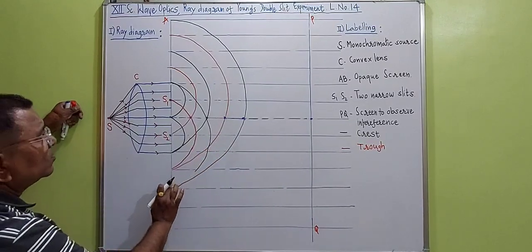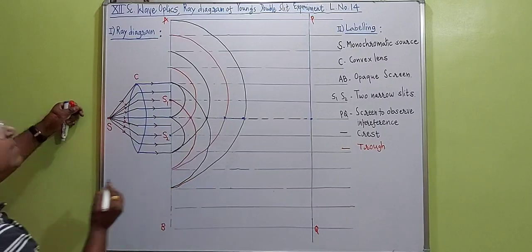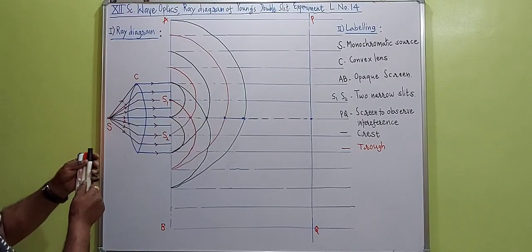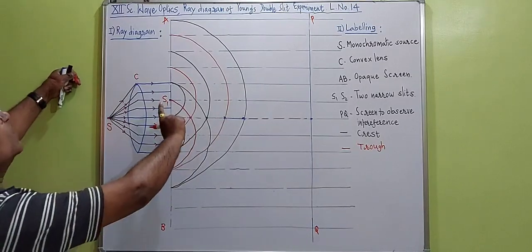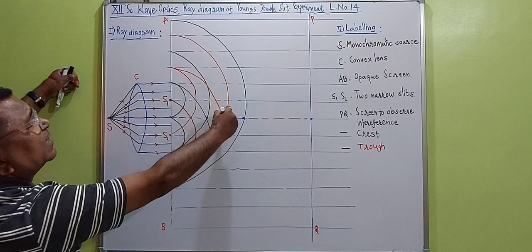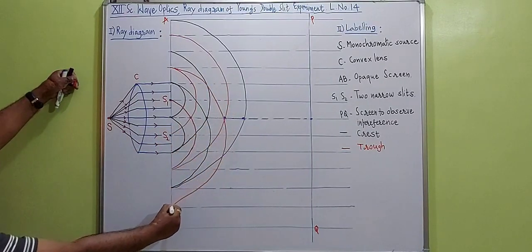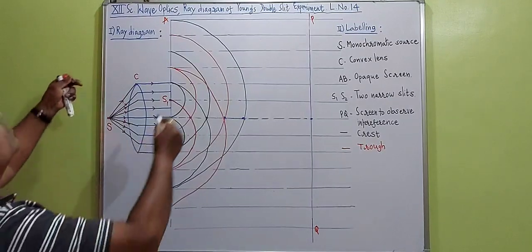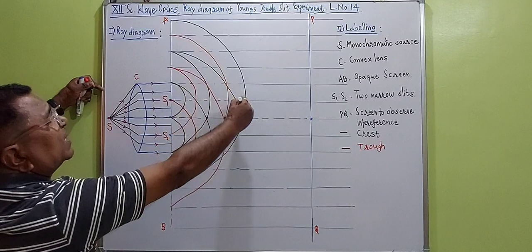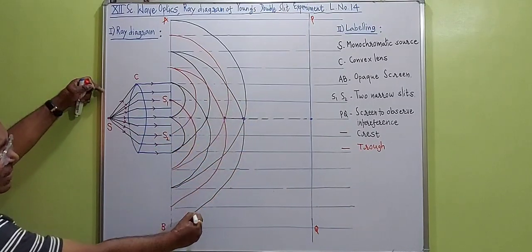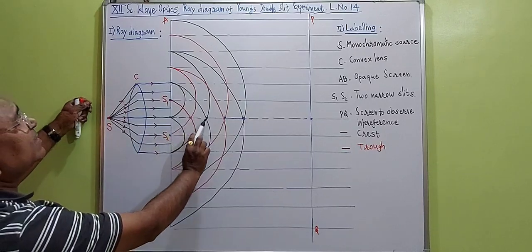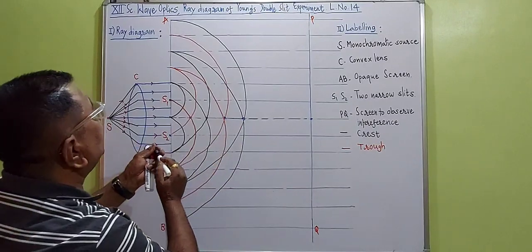Then black from this to this. We have to approach up to this point. Then the next one is red again — come up to this, then red like this. Then again black from this to this. Our diagram is now completed. We get crest-crest, trough-trough, crest-crest, trough-trough, and we get a bright point like this.